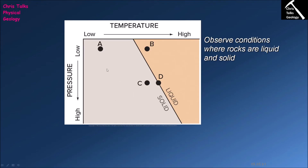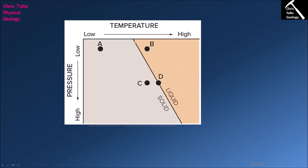Your rock will be perfectly happy and solid when it's in the grey field, but as it moves steadily towards the solidus, eventually when it hits the solidus your rock is going to start melting, giving a mixture of solid and liquid, and then once fully melted it continues into the liquid field. The solidus has a slope to it — the temperature required to make a rock melt gets higher as pressure increases. The higher the pressure, the more difficult it is to melt a rock, so the melting point increases with pressure, giving the solidus its slope.